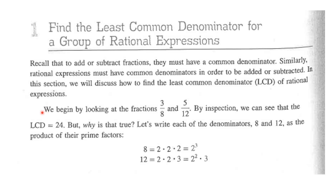We begin by looking at the fractions, as an example: 3 over 8 and 5 over 12. Now, by inspection or previous experience, you will realize that the least common denominator here is 24. But why is that true? Well, let's write each of the denominators, 8 and 12, as a product of their prime factors. So we have that 8 is equal to 2 times 2 times 2, which is 2 cubed.